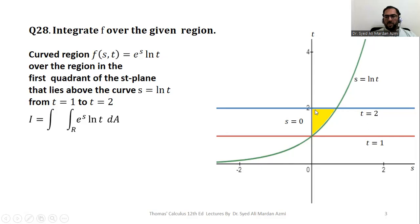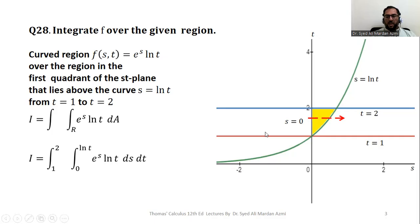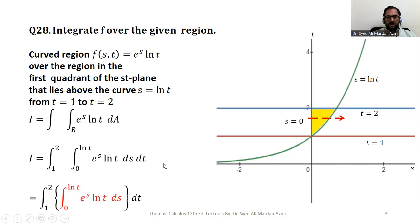The values of t go from t = 1 to t = 2, which are constant boundaries (horizontal lines), so t is our outer variable. We always take the outer variable limits as constant numbers, making s our inner variable. Using the horizontal arrow technique, the arrow enters at s = 0 and exits at s = ln(t), giving inner limits 0 to ln(t) and outer limits 1 to 2.